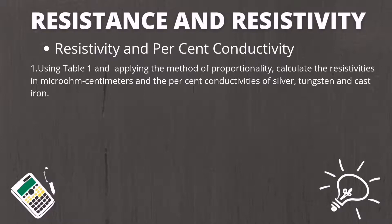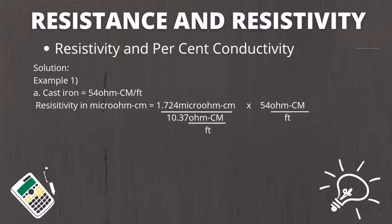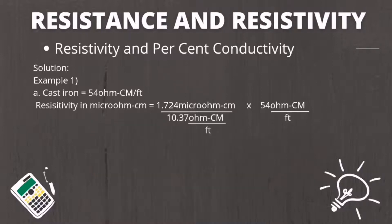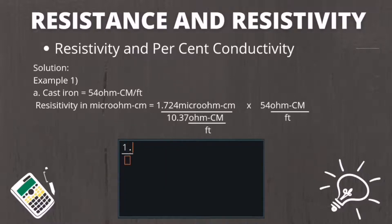Example number one: calculate the resistivities in micro ohm centimeter and percent conductivity of cast iron, silver, and tungsten. For cast iron, the resistivity is 54 ohm circular mil over feet. The solution is: 1.724 micro ohm centimeter divided by 10.37 ohm circular mil over feet, times 54 ohm circular mil over feet. The result is 8.98 micro ohm centimeter. For its percent conductivity: 1.724 divided by 8.98 multiplied by 100 gives 19.2 percent.